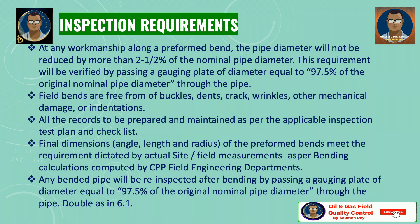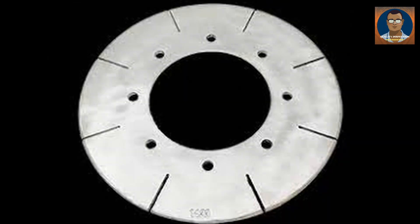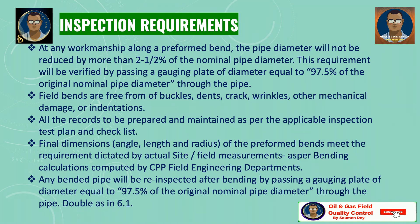How to inspect a bent pipe: At any point along a preformed bend, the pipe diameter will not be reduced more than 2.5 percent of the nominal pipe diameter. This requirement will be verified by passing a gauging plate of diameter equal to 97.5 percent of the original diameter through the pipe. Field bends must be free from buckles, dents, cracks, wrinkles, and other mechanical damage or indentations, though to some extent these wrinkles are acceptable. All records are to be prepared and maintained as per the applicable inspection test plan and checklist. Final bend dimensions — angle, length, and radius — must meet the requirements dictated by actual field measurements as per bending calculations computed by the field engineering department.